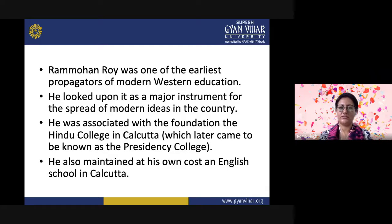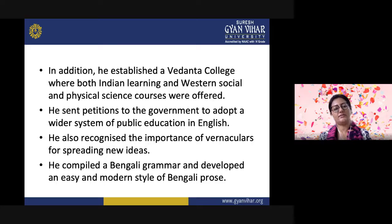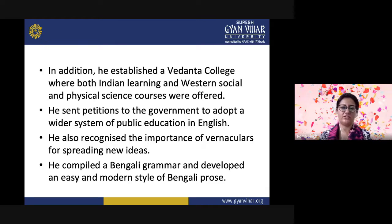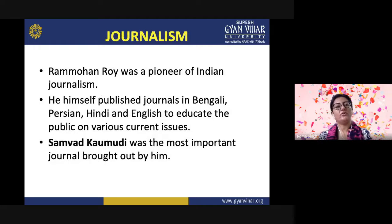Ram Mohan Roy was one of the earliest propagators of modern Western education, looking upon it as a major instrument for spreading modern ideas in the country. He was associated with the foundation of Hindu College in Calcutta, which later came to be known as Presidency College. He also maintained at his own cost an English school in Calcutta. He recognized the importance of vernaculars for spreading new ideas, compiled a Bengali grammar, and developed an easy and modern style of Bengali prose. Ram Mohan Roy was also a pioneer of Indian journalism.